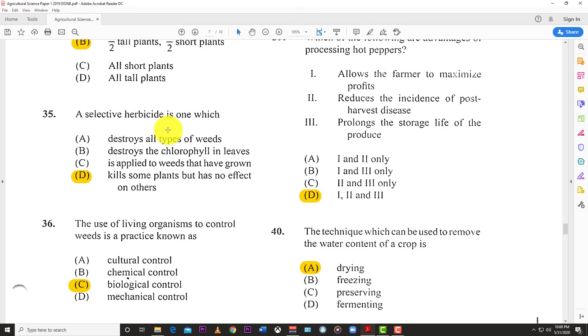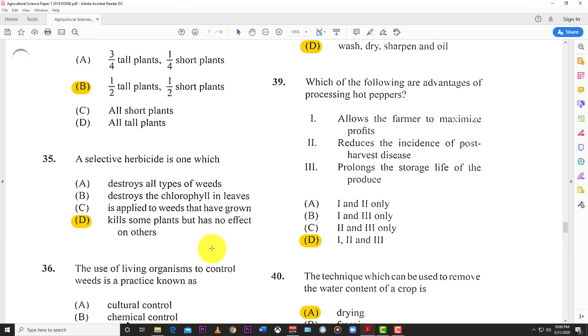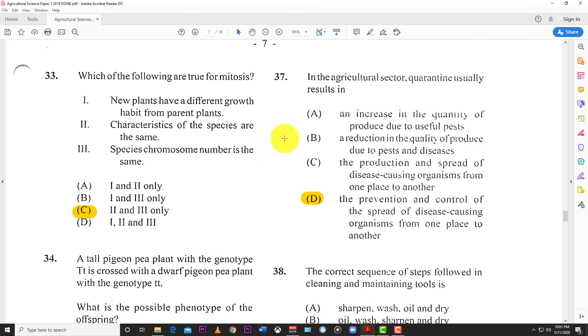Number 34: A tall pigeon pea plant with genotype Tt is crossed with a dwarf pigeon plant with genotype tt. What is a possible phenotype of the offspring? The answer is half tall plants, half short plants. Number 35: A selective herbicide is one which kills some plants but has no effect on others.